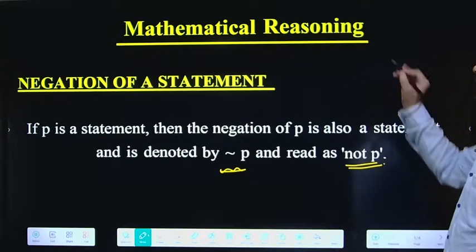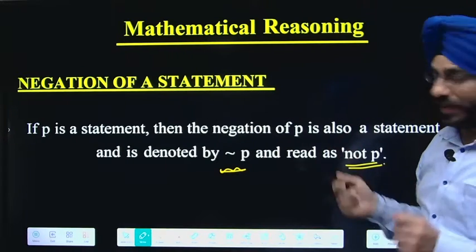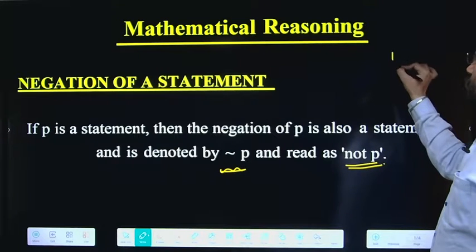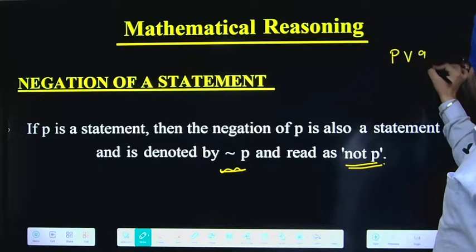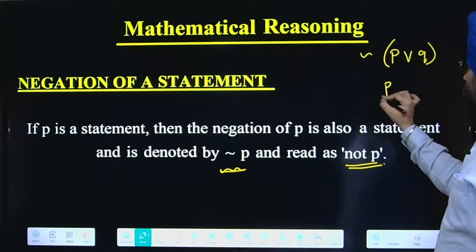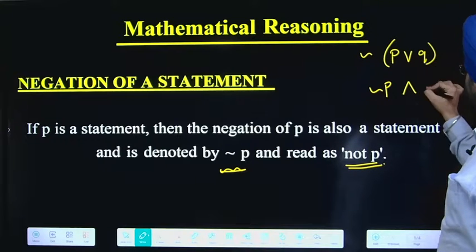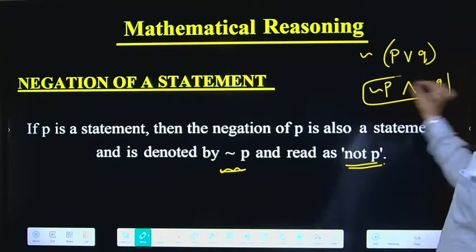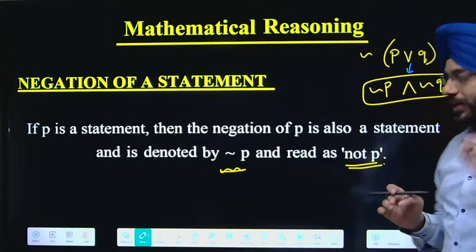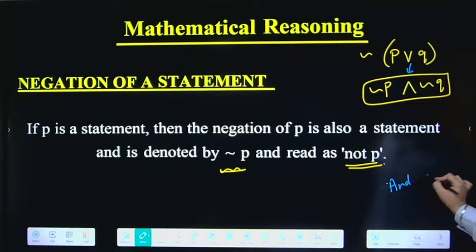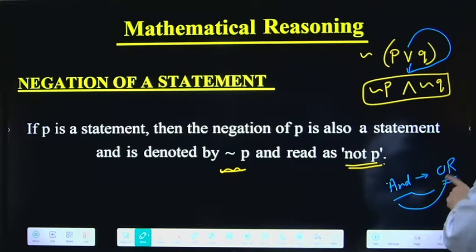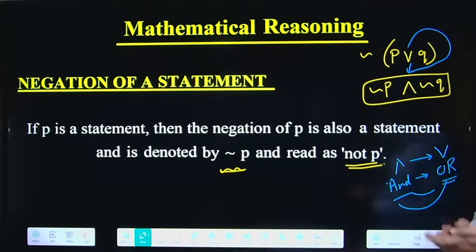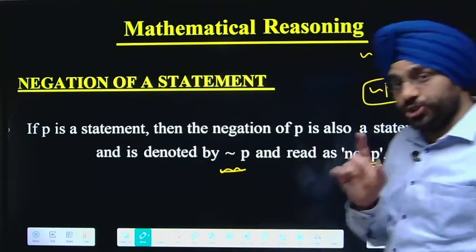For negation, if you want to apply negation to any term, it means apply the 'not' word. One important rule: if P AND Q is given and you apply negation, then AND becomes OR. Similarly, if OR is given then it becomes AND. So conjunction changes to disjunction and disjunction changes to conjunction upon negation.